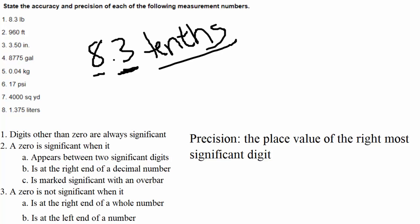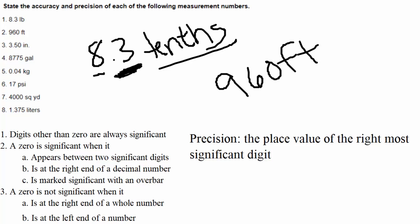That's what precision means — the place value of the right-most significant digit. For 960 feet, it had only two significant digits because the zero didn't count. The right-most significant digit was the 6, which is in the tens place. So 960 feet is precise to the tens.